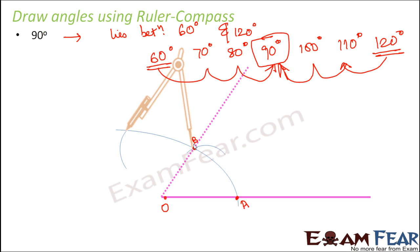Now how about 120 degree? Keeping the same radius of the compass, but this time B as the center, draw another arc. So you would see that this new arc also intersects the existing arc at some point C. So if you join points O and C, you get a 120 degree.